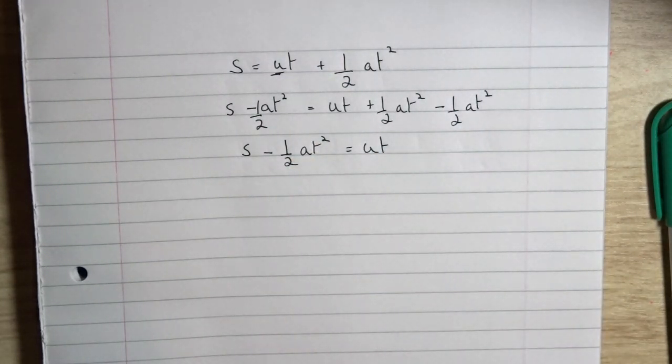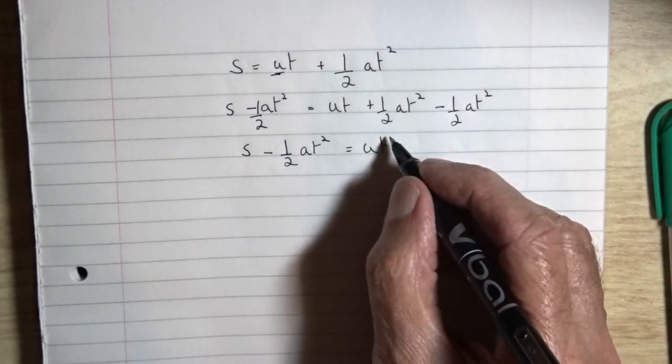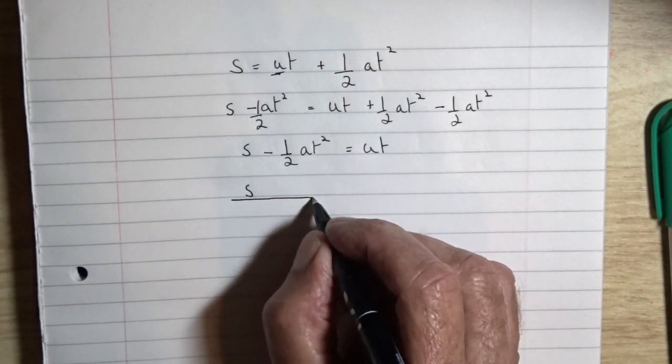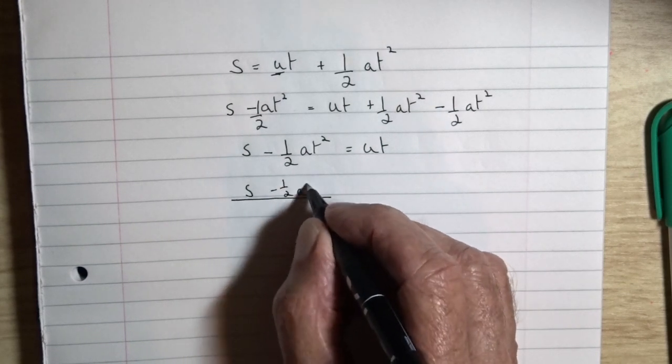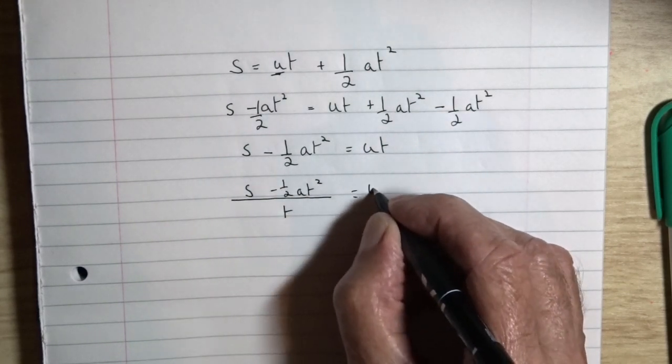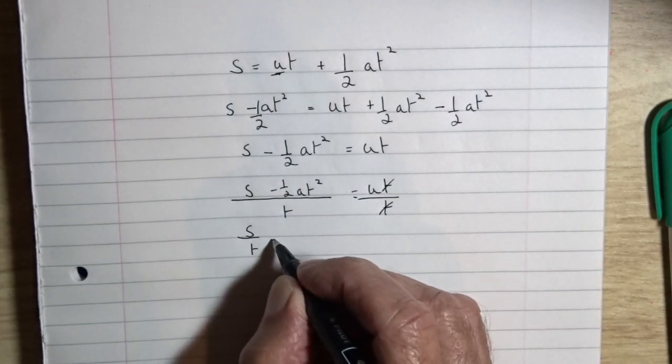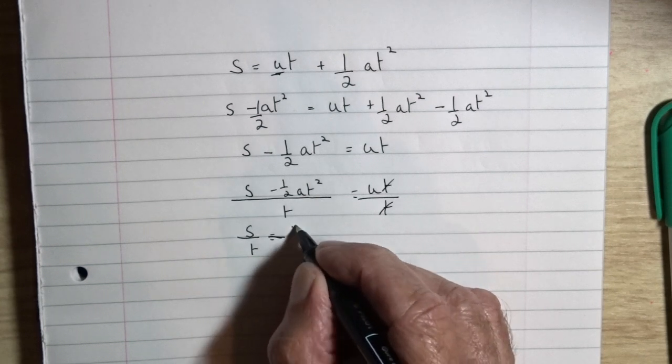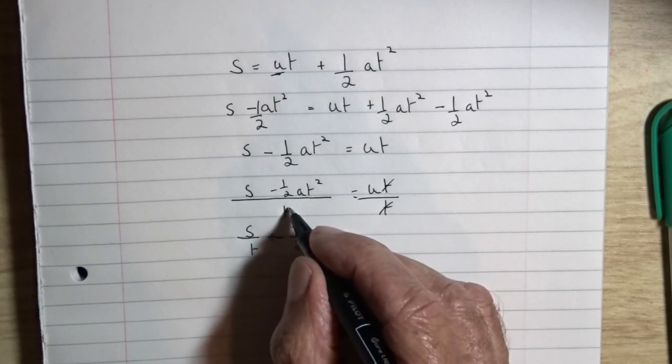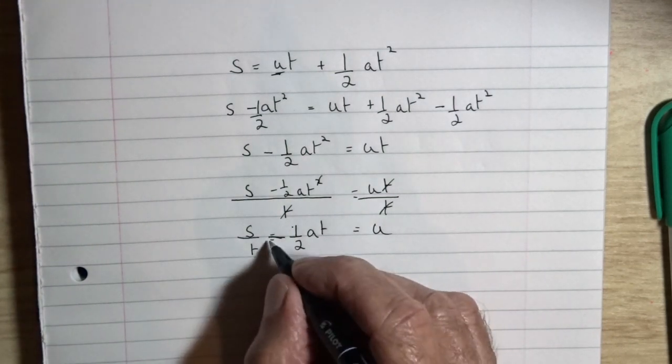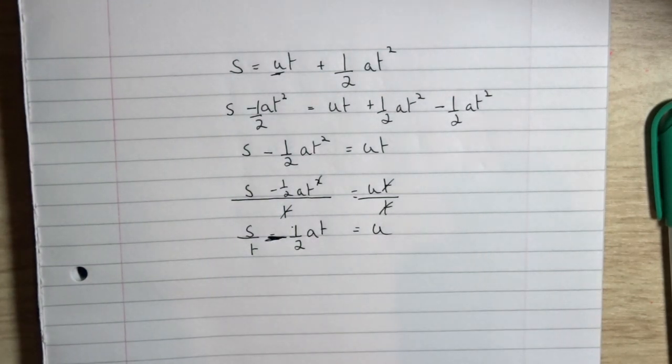Now we want u as the subject, so we have to divide both sides by t to get rid of it on the right hand side. So we've got s minus half at squared divided by t. Dividing both sides by t, it cancels out on the right. Simplifying a little on the left by separating the terms, we have s divided by t minus half at, because one of the t's cancels out, and that equals u.